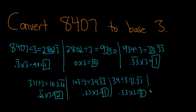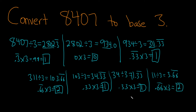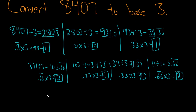Then you do it again. Take 11 divided by 3 — long problem, going fast, sorry. 11 divided by 3 is 3.66. Then you do 0.66 times 3, that gives you 2. Almost there. Then you do 3 divided by 3, you get 1.0. So you do 0 times 3 and get 0. So that's the remainder.